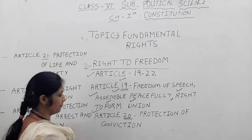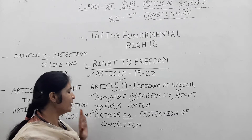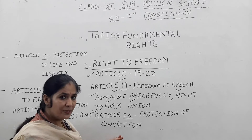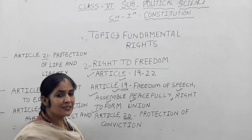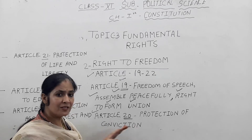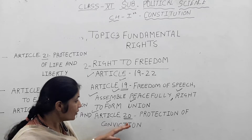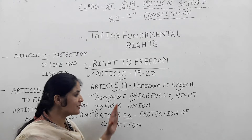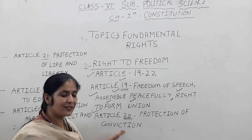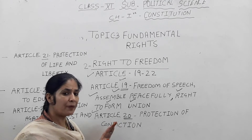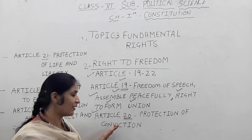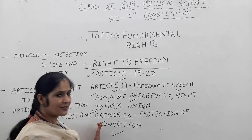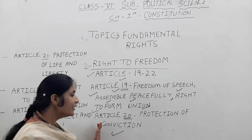Article number 20 deals with protection of conviction. It means if any person is convicted or arrested, he has the right to protect himself. It is the protection of conviction — anybody arrested by the police has the right to protection of conviction under article number 20.